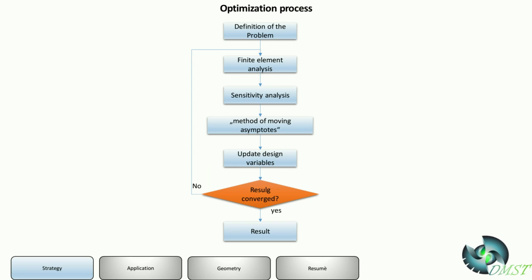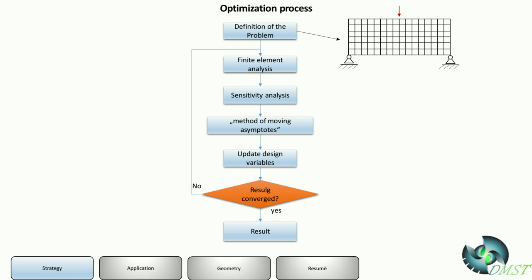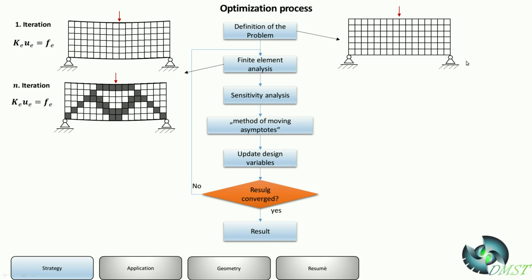First we need to define the problem. In this case it's a static load case on the left, and on the right hand side there are two boundary conditions. What we will do is use a finite element problem. On the first iteration we use it on the actual problem, and in each iteration step we will do it on the problem with a material distribution. After the finite element analysis we use a sensitivity analysis.